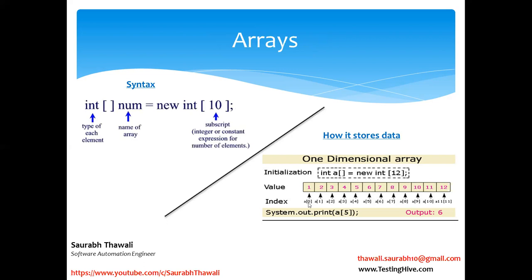If I want to access the value at index 5, I use: System.out.println(a[5]); — this extracts the value stored at the fifth index. The key things to remember: array is a collection of multiple values of a similar data type; it's a bucket for multiple values; you define how many values you want to store; and whenever you access a particular value, you need to know its index. Memory is reserved sequentially starting from 0.